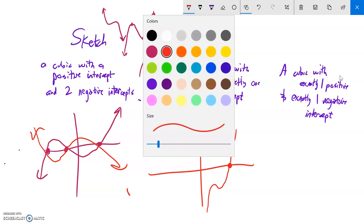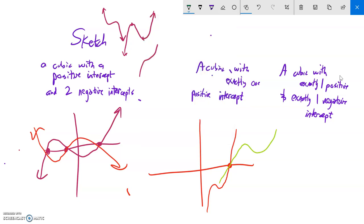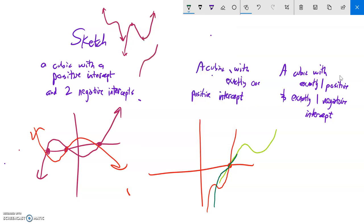It could be something like that, or maybe just goes through it and then does that curve up here, or maybe just flattens out right there and comes back up. Those are all possibilities.